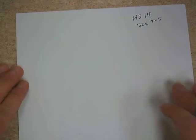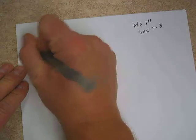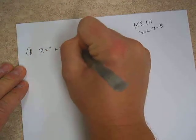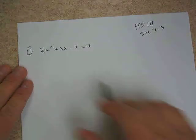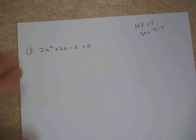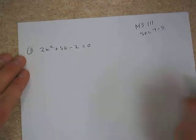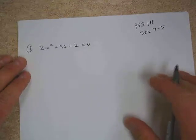The quadratic formula is going to give us solutions to any quadratic equation. Starting with page 385, number 1: we have 2x squared plus 5x minus 2 equals 0. Whether this is factorable or not, we can still use the quadratic formula. If it's not factorable, we'd have to use the quadratic formula, but the bottom line is we can use it no matter what.